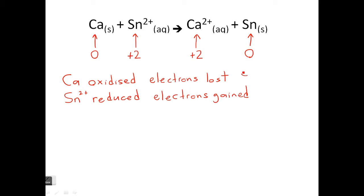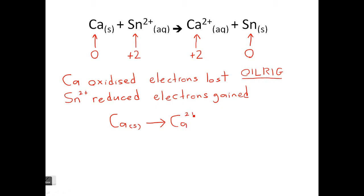In terms of electrons: oxidation means electrons are lost, and if it's reduced, electrons are gained. Remember, this comes from OIL RIG — it's very important. So let's write some half equations. For calcium, we start with the solid. It's losing electrons, so the electrons need to be on the right-hand side of the arrow. How many has it lost? It's gone from zero to plus 2, so it's lost two electrons.